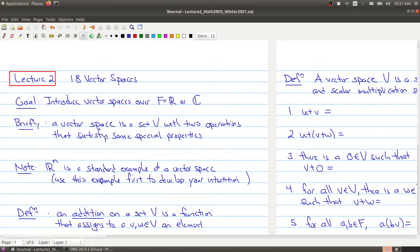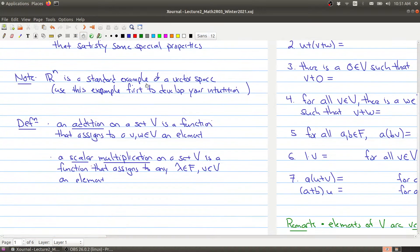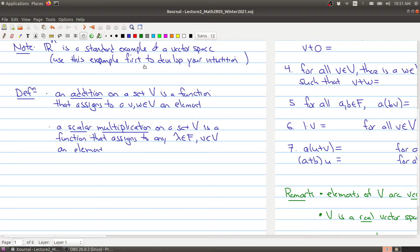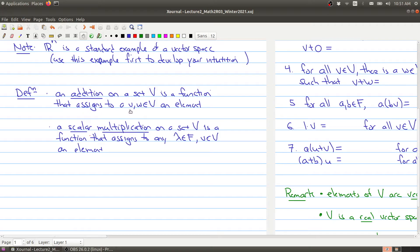Now I talked about briefly what a vector space is—it's a set, a collection of objects with operations. What are these operations? The two operations on a vector space are addition and scalar multiplication. An addition on a set V is a function that assigns to each pair of elements V and W a new element V+W inside of V. So you have a way of adding two vectors together.